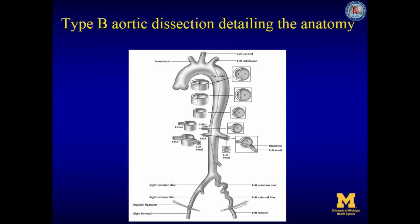Intravascular ultrasound, or IVUS, is an important support in treatment of acute type B dissection with malperfusion. The cross-sectional images of the aorta and branch vessels shown in this figure correlate to the images seen on IVUS. IVUS demonstrates which branches are likely to be compromised and by what mechanism, by showing the relation of the dissection flap to branch artery origins. In this figure, the primary entry tear is situated in the proximal descending thoracic aorta.